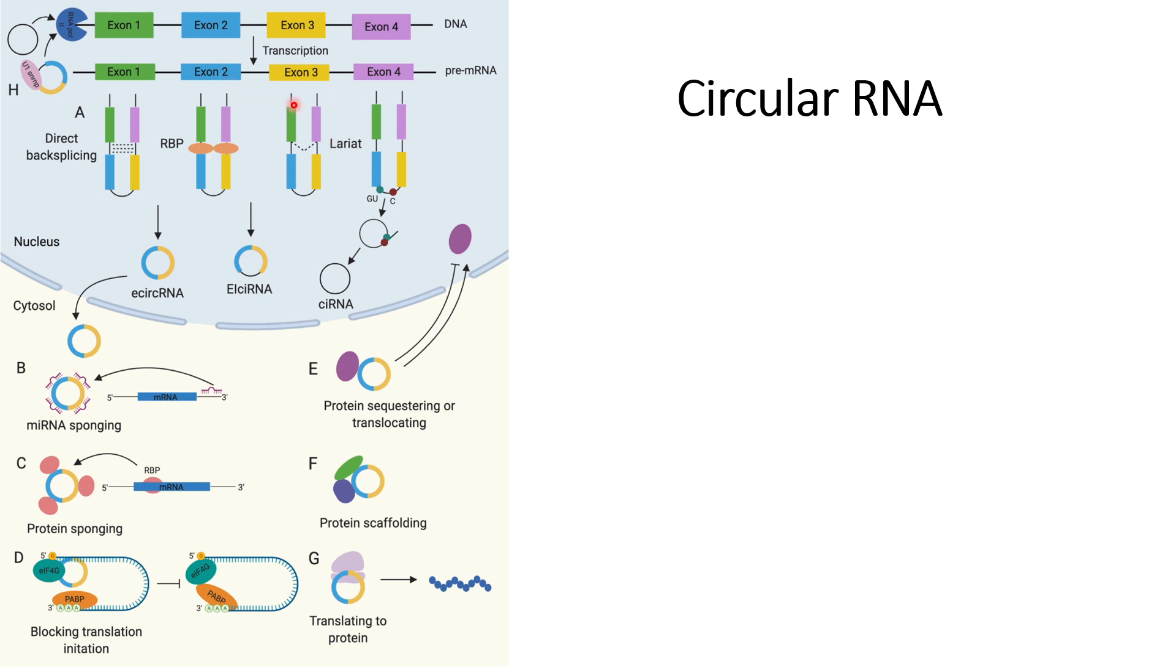Generally, what has been found is that exonic circular RNAs move to the cytoplasm, whereas exon-intron circular RNAs and intronic circular RNAs are more commonly found within the nucleus. When exonic circular RNA moves into the cytoplasm, certain interactions can occur.